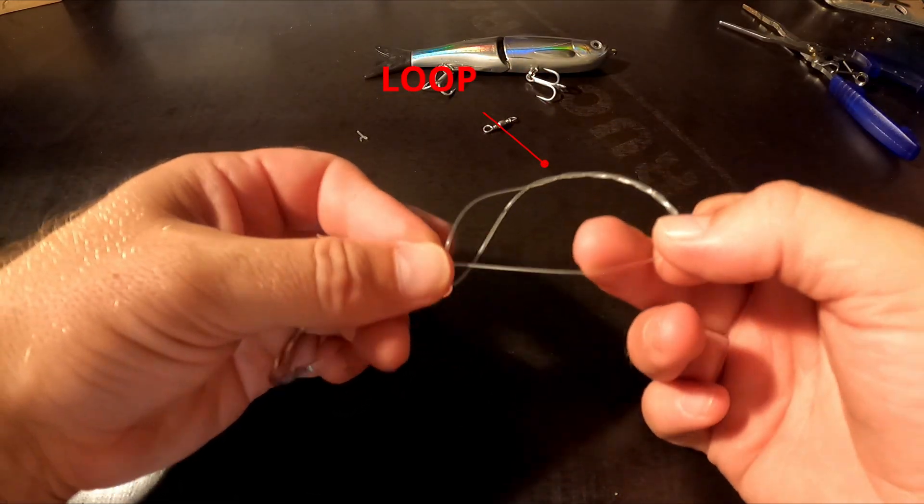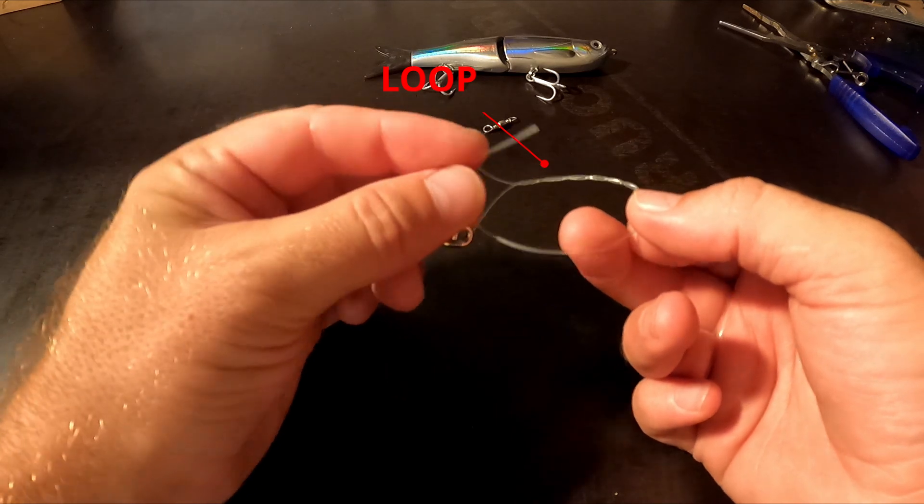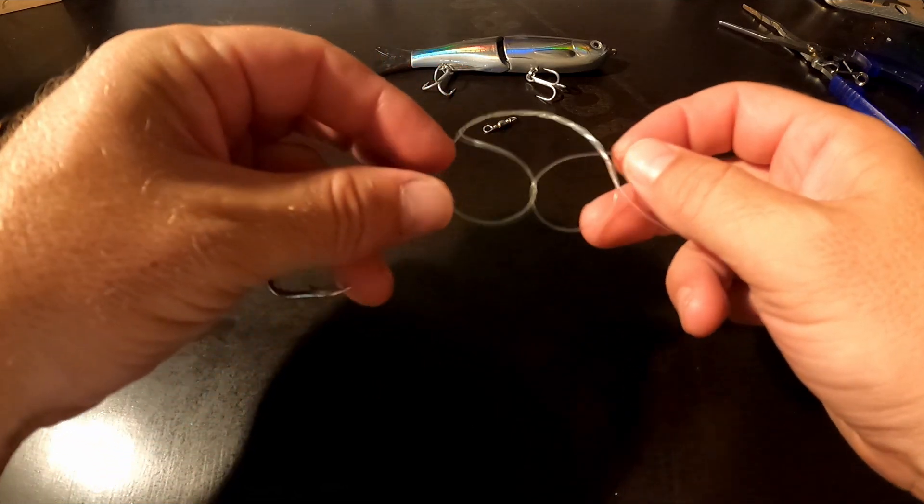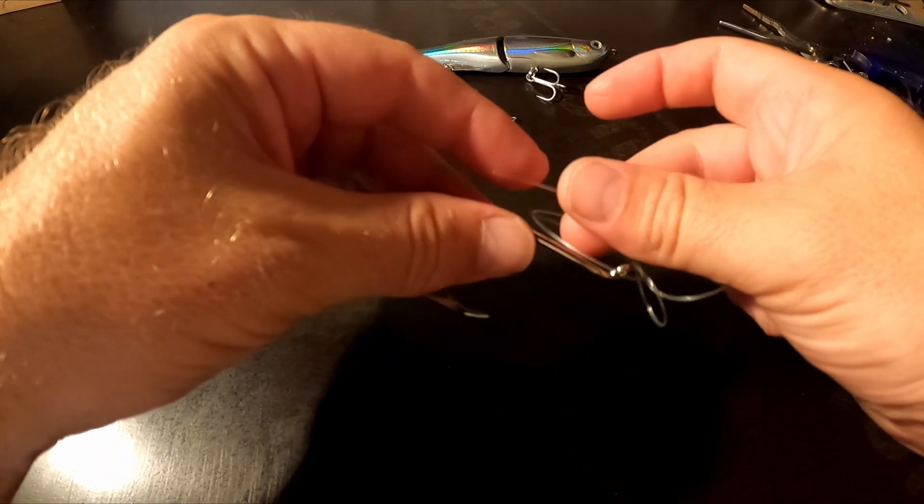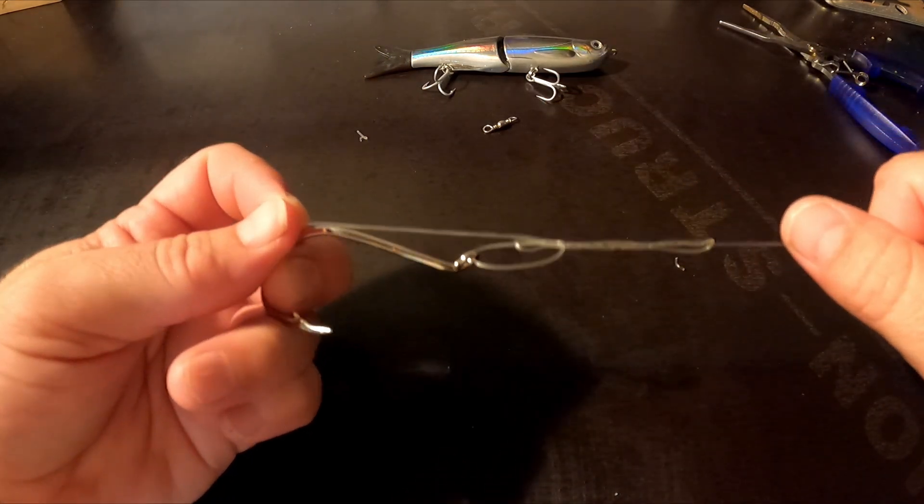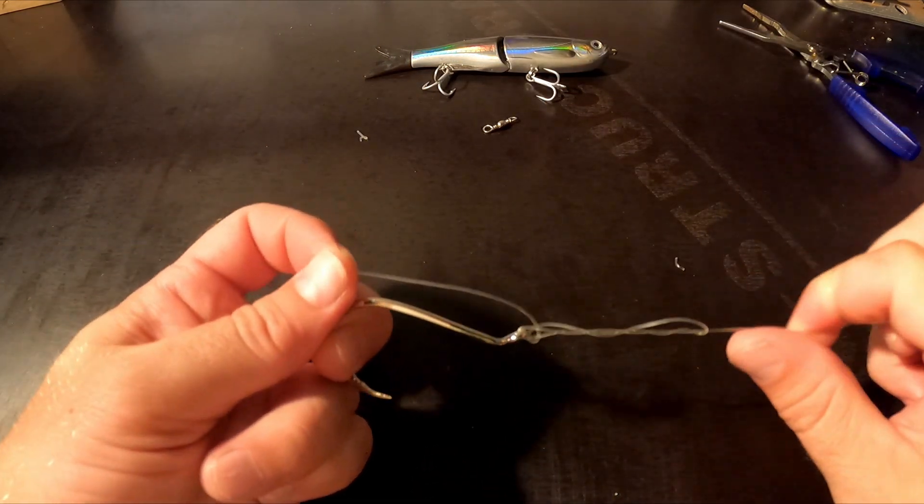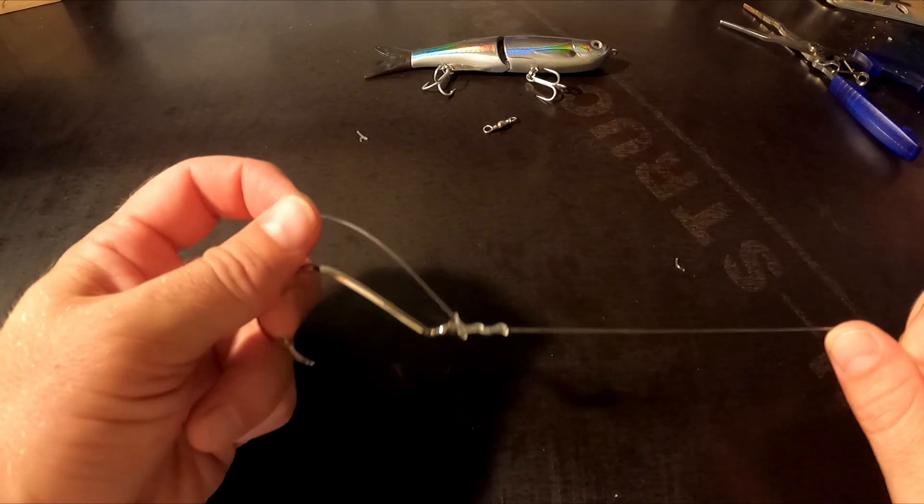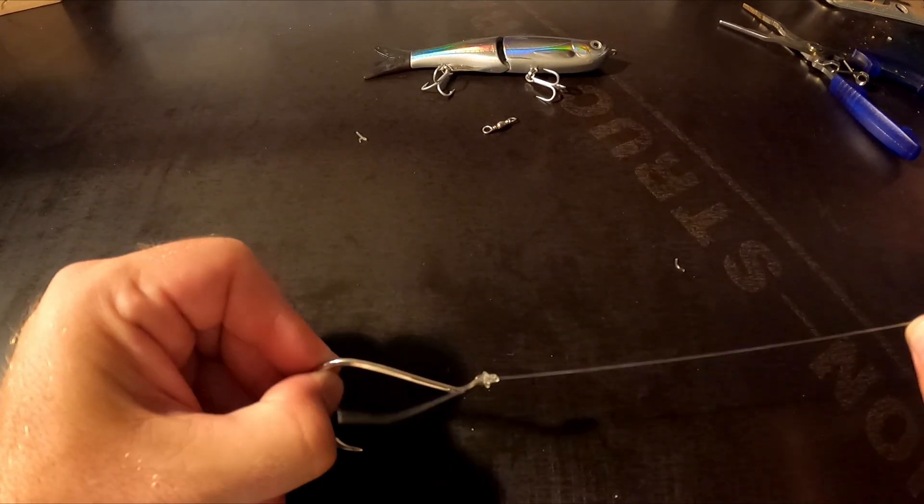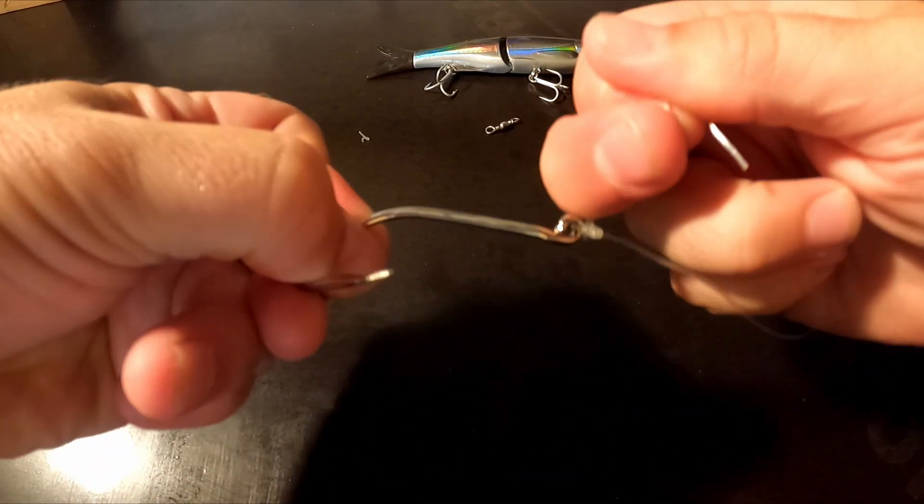Then you pass your line through your loop near the eye of the hook, and that's created a second loop right here where my finger is. So you grab your tagline and you pass it through that second loop like that. Put your tagline up against the shank of the hook and then you pull them together to tighten.